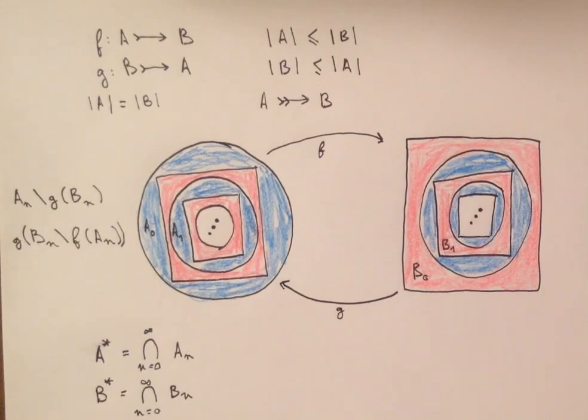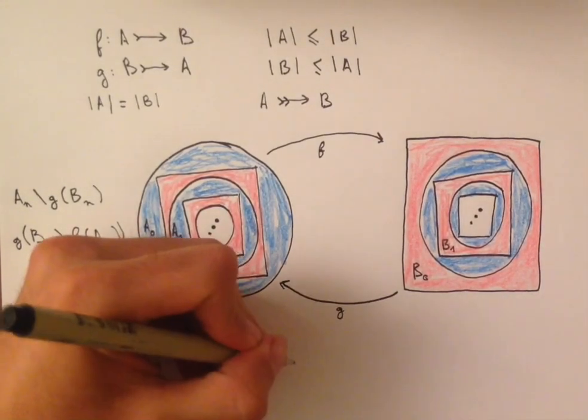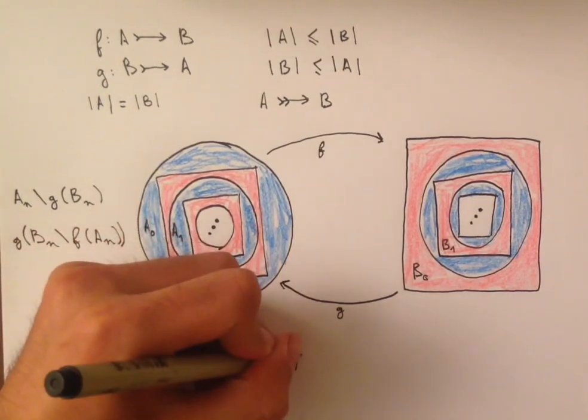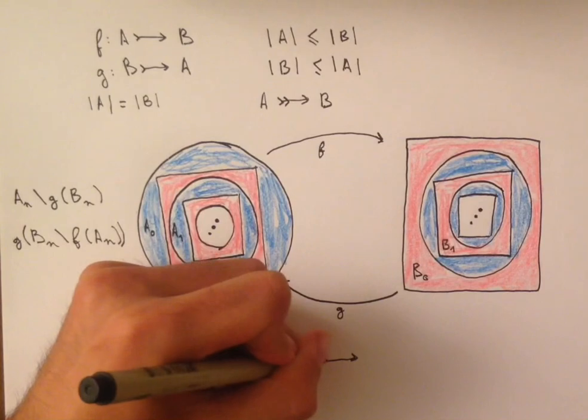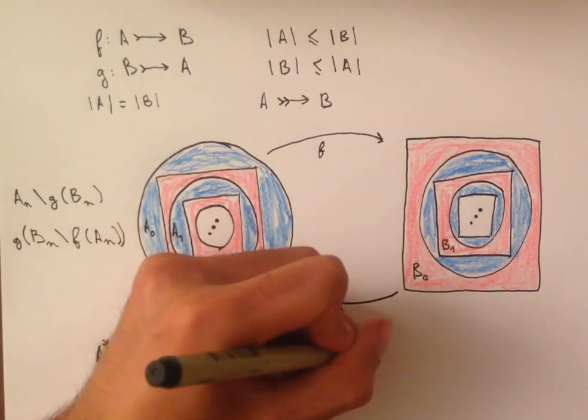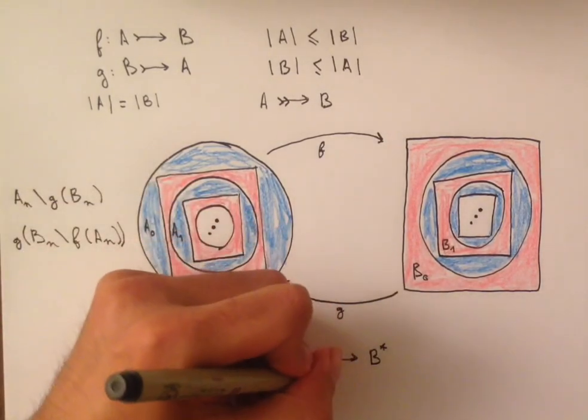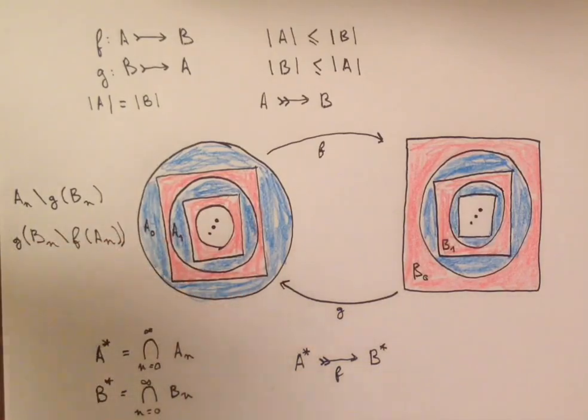So now what I'm going to say is that we already have our bijection from A star to B star using F. And it's very much— Wait. A star would not be answered.